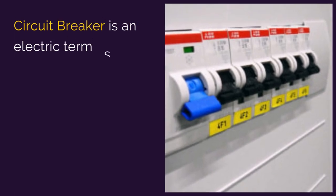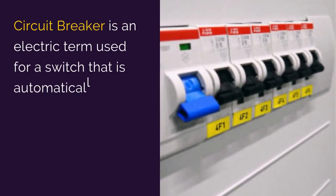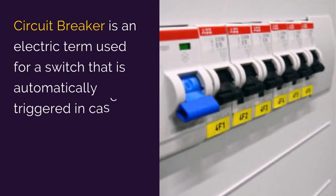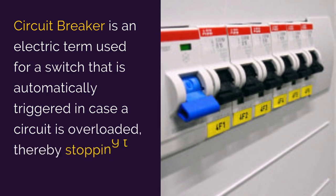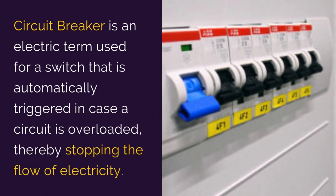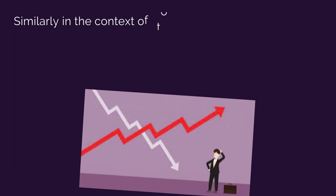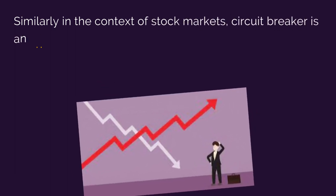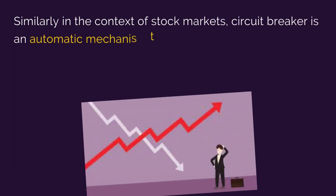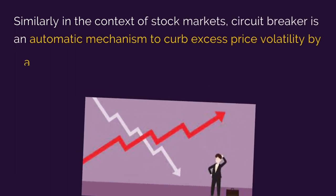Circuit breaker is an electrical term used for a switch that is automatically triggered in case a circuit is overloaded, thereby stopping the flow of electricity. Similarly, in the context of stock markets, circuit breaker is an automatic mechanism to curb excess price volatility.